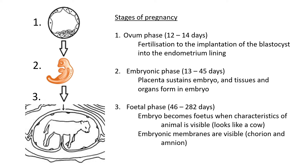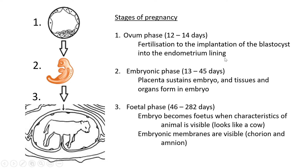There are three main stages of pregnancy. The first is the ovum phase, lasting 12 to 14 days. This covers fertilization through to the implantation of the blastocyst into the endometrium lining — from when the egg cell meets the sperm cell, the zygote forms, then eventually the blastocyst, and just before it becomes an embryo, that's where this phase ends.